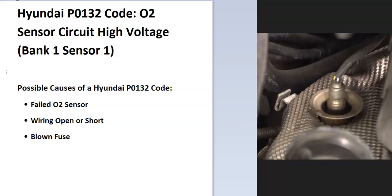Bank one is always the side of the engine with the number one cylinder. So if you have a four-cylinder, it won't matter, but if you have a V6, then find the number one cylinder and that'll be bank one. Sensor one is always the first sensor going down on that side.